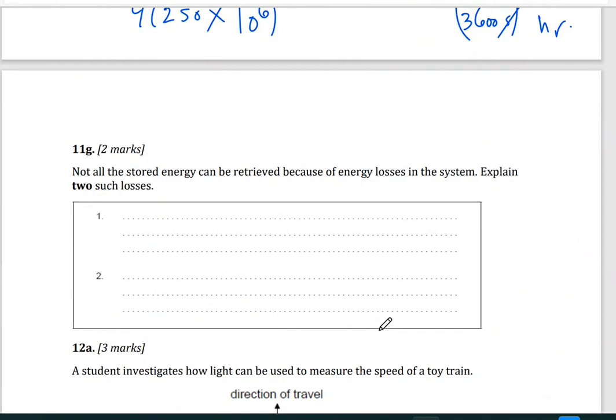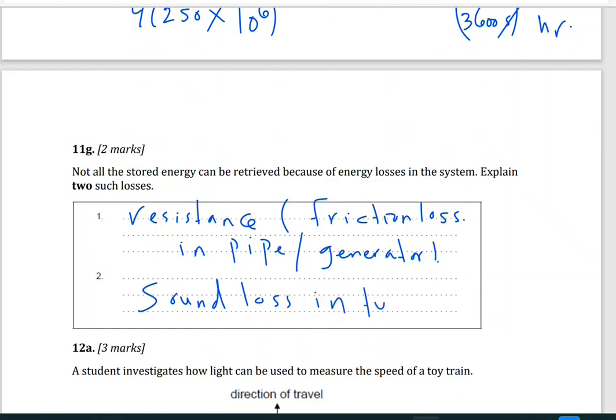Now the last section of this question, not all stored energy can be retrieved because of energy losses in the system. Explain two such losses. We have losses in the turbine as friction, as heat as well. We have also sound loss in the turbine. In the pipe itself, we have friction loss because of resistance. So the type of resistance, it could be resistance friction loss, whether in the pipe or generator, sound loss, wear in the turbine. That's it. See you in the next video.